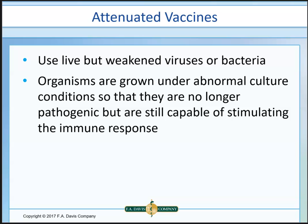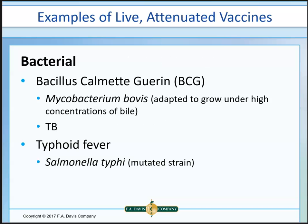Attenuated vaccines are usually live but very weakened — viral or bacterial. They're grown under abnormal conditions so they're not pathogenic or virulent, but they're still capable of eliciting an immune response. An example of a live attenuated vaccine is BCG — Bacillus Calmette-Guérin — normally used for TB. It's an actual bacteria that promotes a T-cell, cell-mediated response. Another example is the Salmonella typhi mutated strain for typhoid fever.